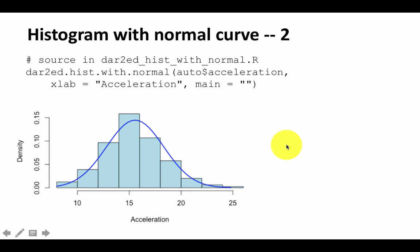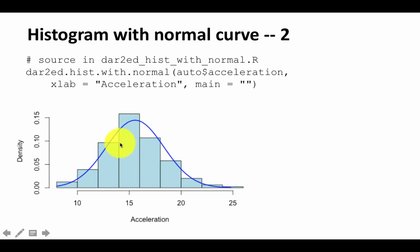Sometimes your distribution may be very different from a normal distribution — overlaying the normal distribution will accentuate that it's skewed. In this example, acceleration appears to be pretty normally distributed because there's a very good match between the histogram and the normal bell-shaped curve. This is a visual comparison of how normal the data is.